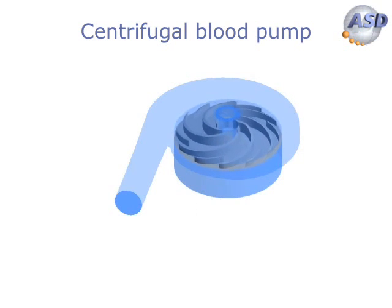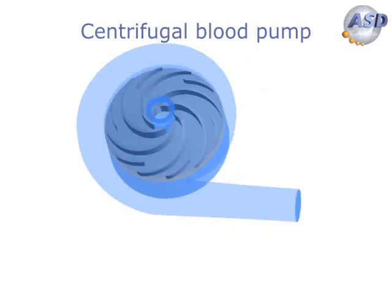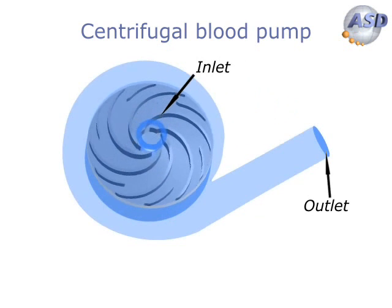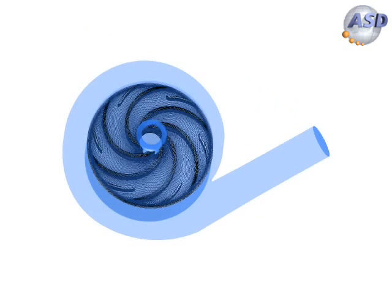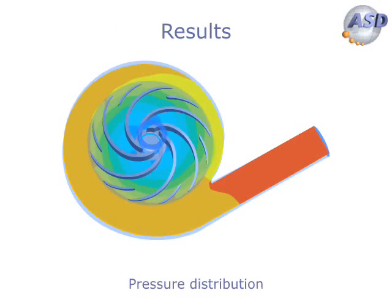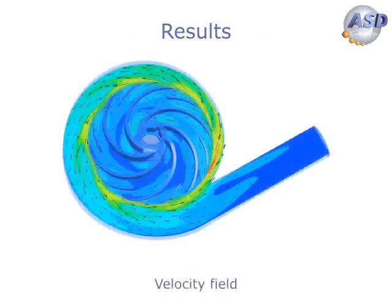Here you can see a centrifugal blood pump that is driven by a magnetic field. Inflow takes place in radial and outflow in tangential direction. A numerical model is developed on the basis of 3D data, which is indicated here with a mesh on the impeller surface. With this pump model the flow field can be calculated and analyzed regarding pressure and velocity distributions or undesired flow phenomena.